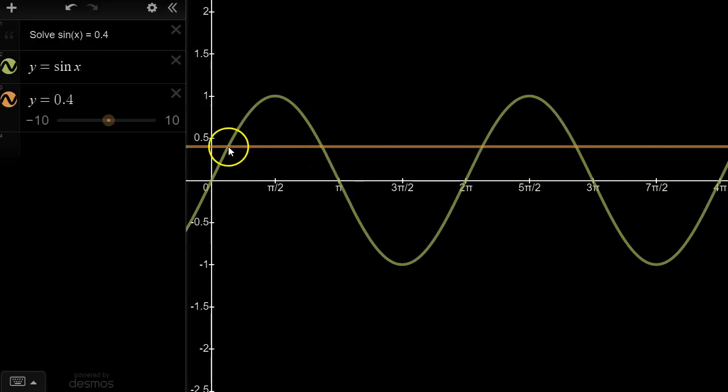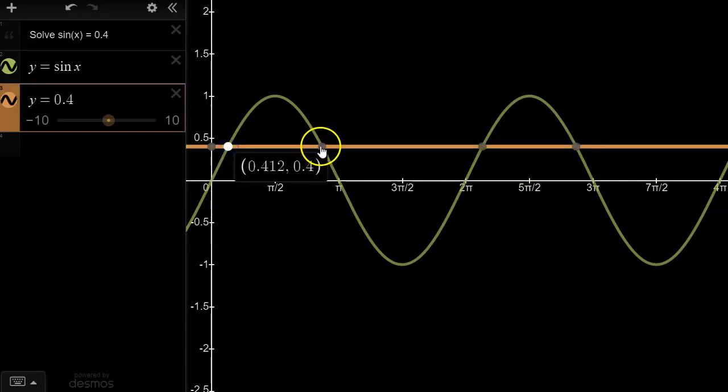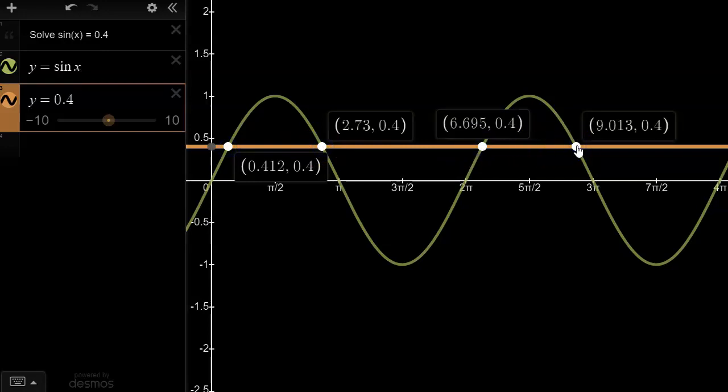We would now have four solutions to the equation on the domain, specifically 0.412, 2.73, 6.695, and 9.013.